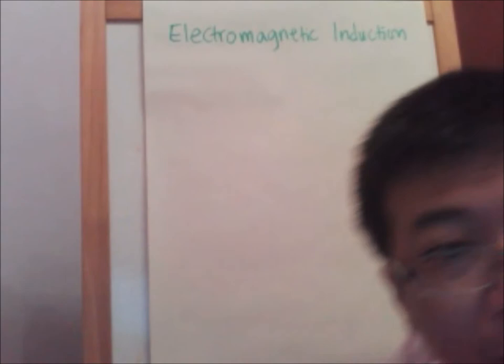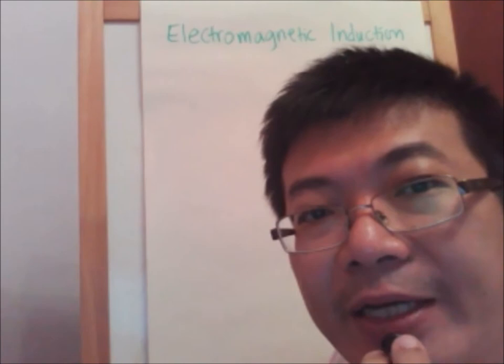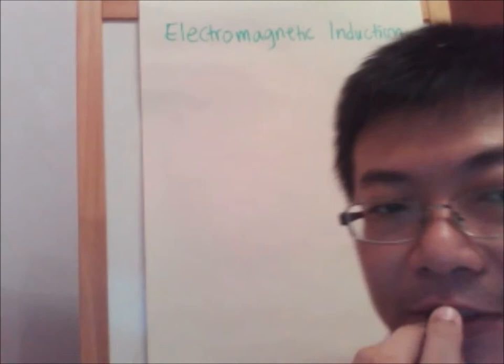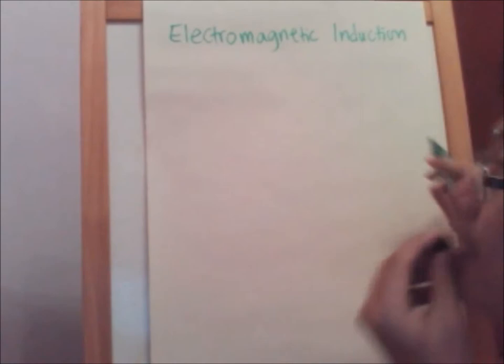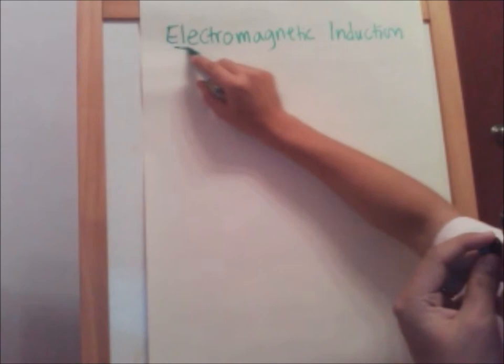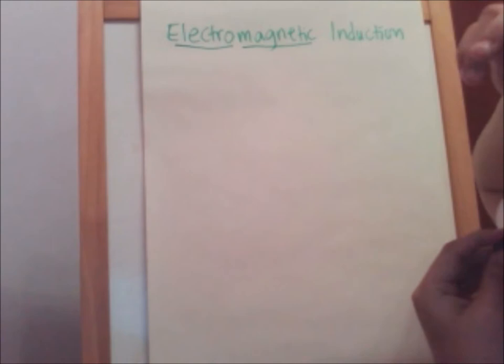Hello, good morning. Today I'm going to revise briefly on the chapter electromagnetic induction. This chapter is only applicable to the pure sciences. Electromagnetic induction in simple terms means we use a change of magnetism to produce electricity.